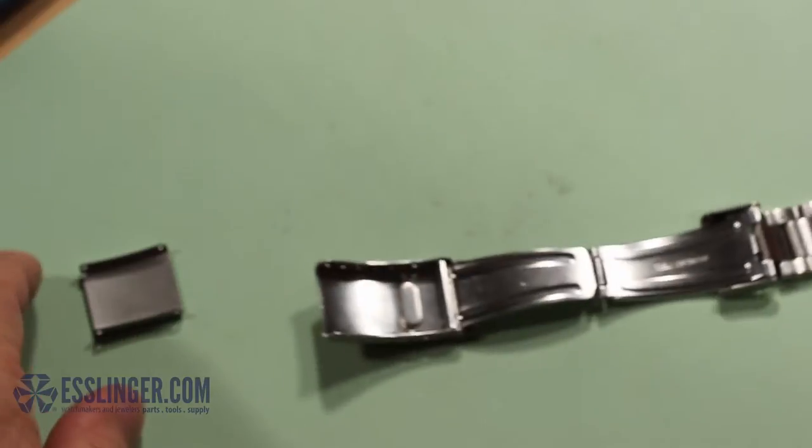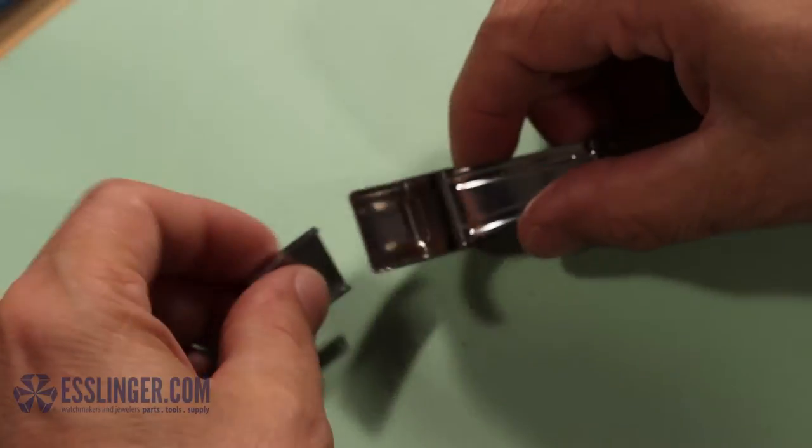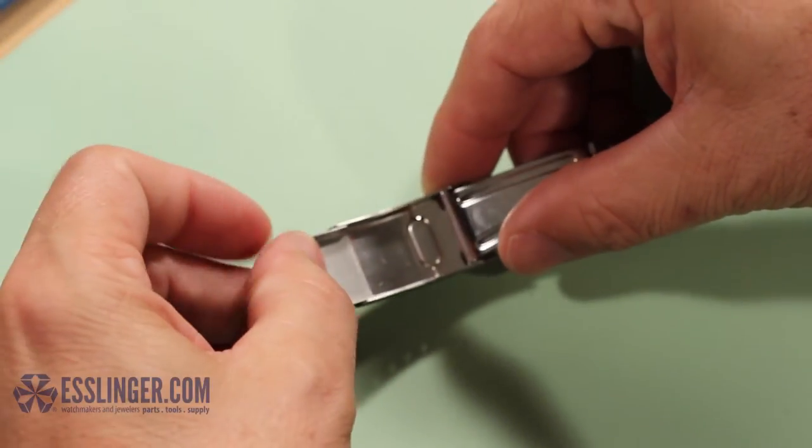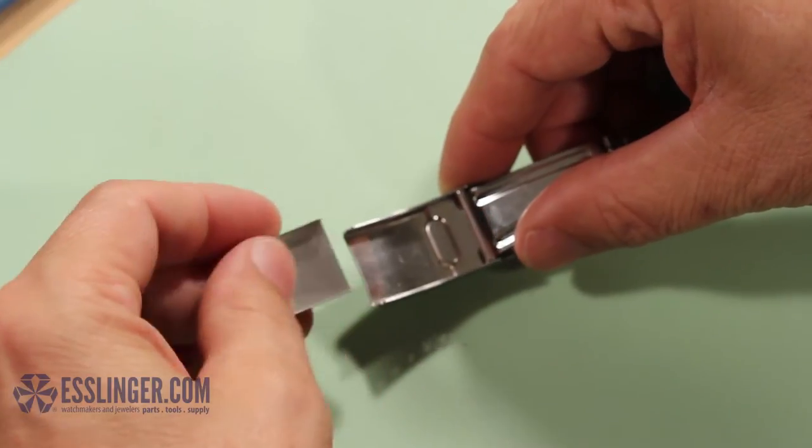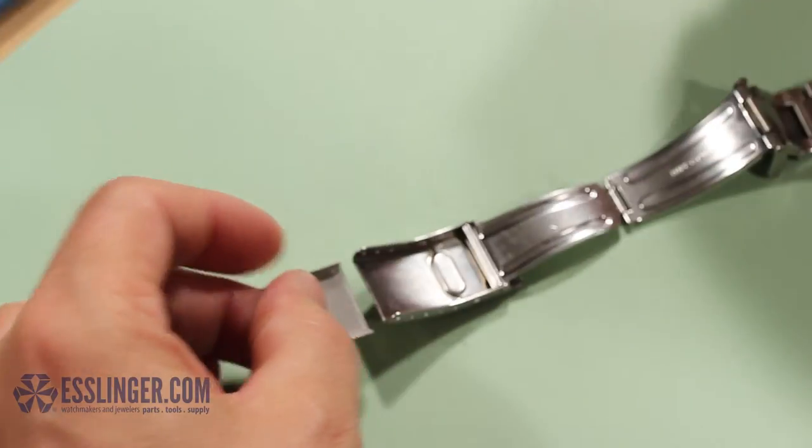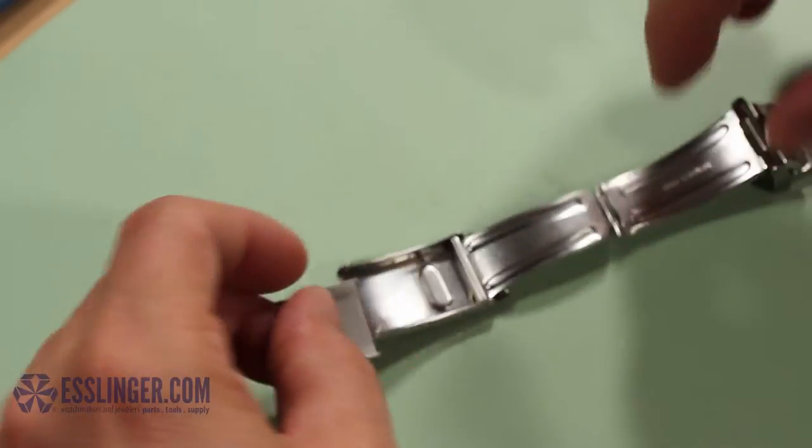Start with the slightly smaller end of the buckle extender and insert it into the free end of the watch band clasp. Line the holes of the extender up with a pair of holes in the clasp to set the length you need to add.